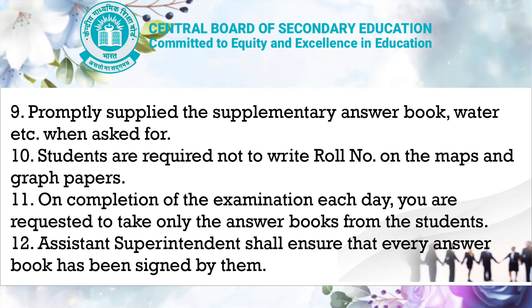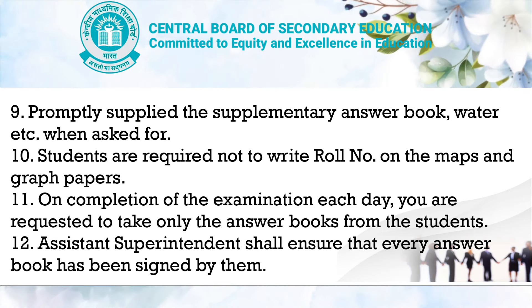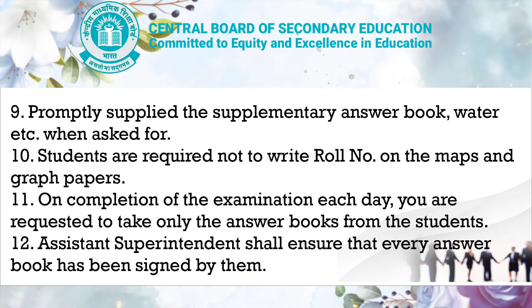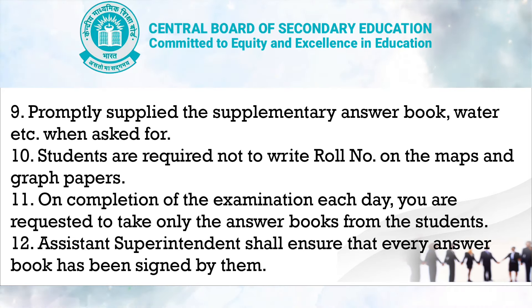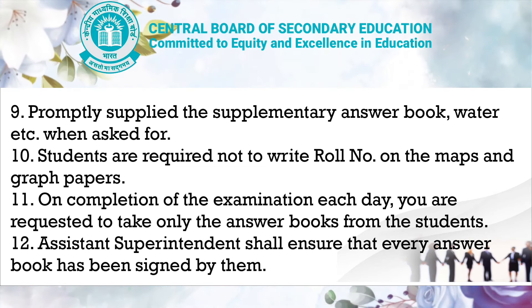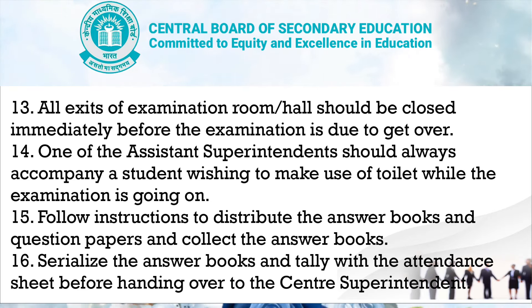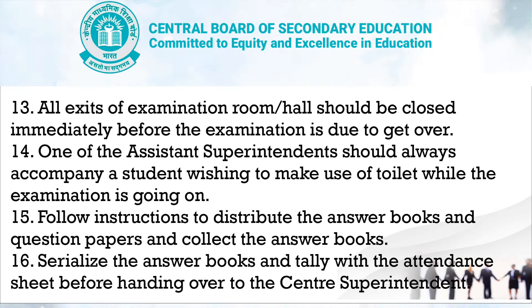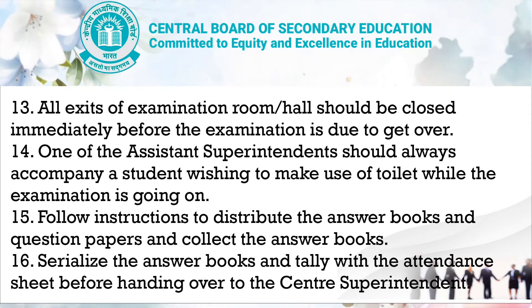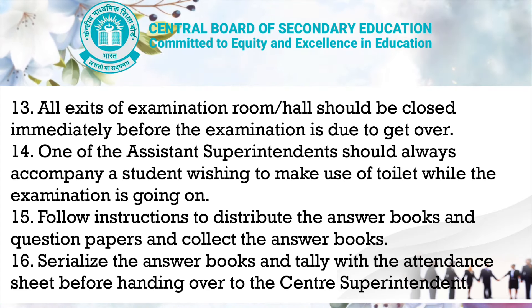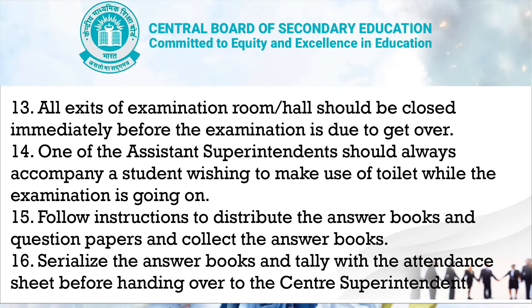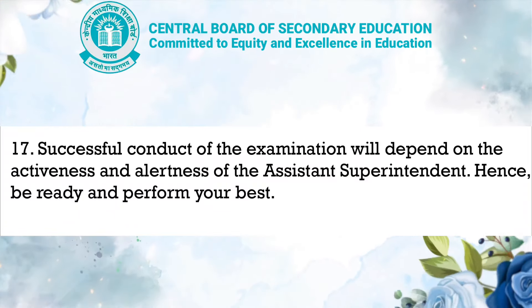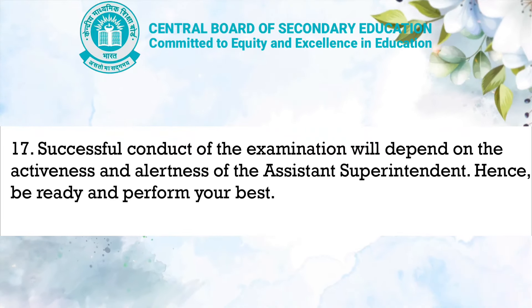Tenth, students are required not to write their roll number on the map and graph paper. Eleven, on completion of examination each day, take only the answer book from the student. Twelve, the assistant superintendent shall ensure that every answer book has been signed by them. Thirteen, all exits of the examination room should be closed immediately before the examination is due to get over. Fourteen, one of the assistant superintendents should always accompany a student wishing to use the toilet while the examination is going on. Fifteen, follow instructions to distribute the answer book and question paper and collect the answer book. Sixteen, serialize the answer book and tally with the attendance sheet before handing over to the center superintendent. Seventeen, successful conduct of the examination will depend on the activeness and alertness of the assistant superintendent — be ready and perform your best.